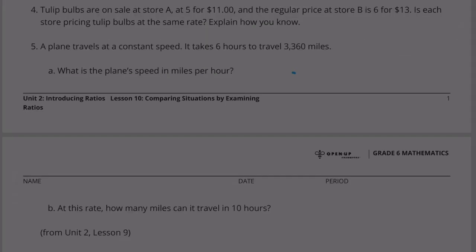Number 4, tulip bulbs are on sale at store A, 5 for $11, and the regular price at store B is 6 for $13. Is each store pricing tulip bulbs at the same rate? Explain how you know.